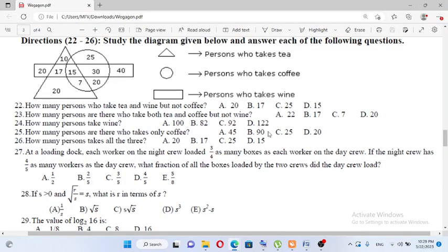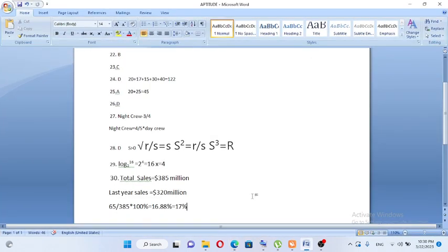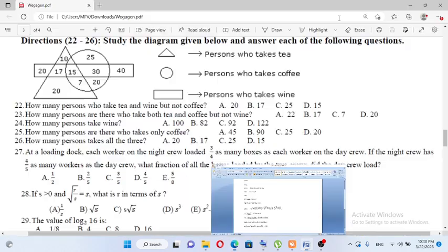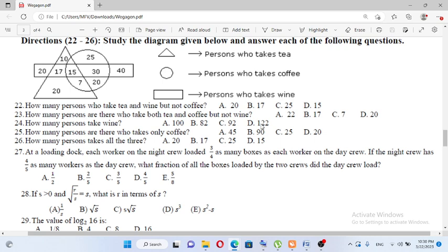How many persons take wine? This is the total of the wine circle. The answer is D, 122.